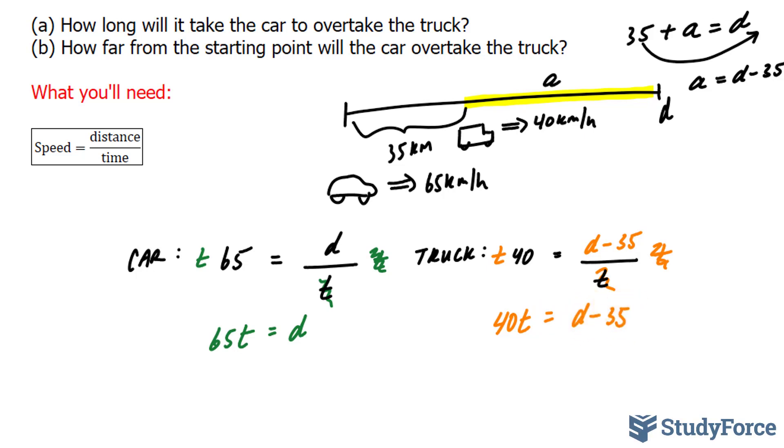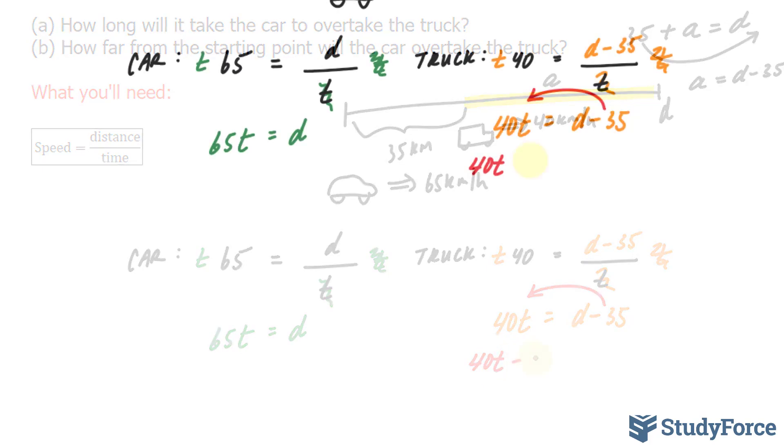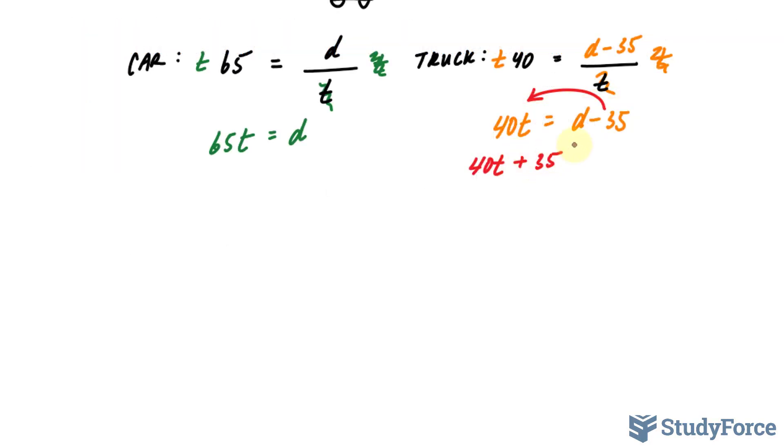I said originally that I wanted to solve for D. So all I have to do is bring this minus 35 over, where I get 40T plus 35. Notice that this 35 was negative, and it became plus 35 when I moved it over. And that's equal to D. My strategy at the beginning was to solve D in both of these equations and set them equal to each other. And I'll do that next.